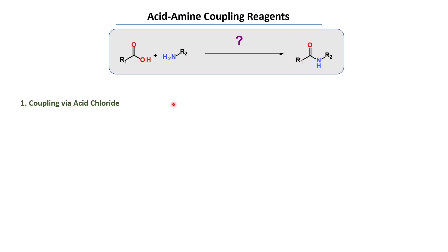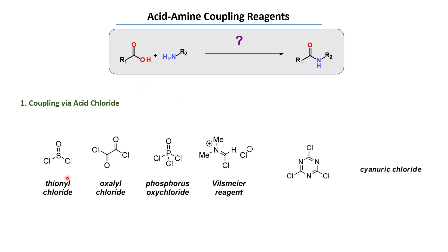The first is the well-known method of coupling with Acid Chloride. We can make the acid chloride from Thionyl Chloride, Oxalyl Chloride, Phosphorus Oxychloride, and also Cyanuric Chloride to get this acid chloride, and further we can treat with the amine to get the amide.